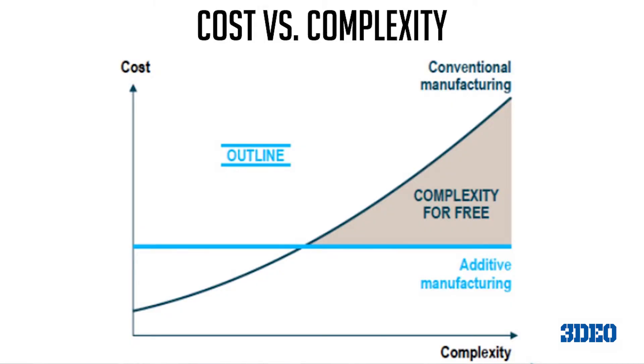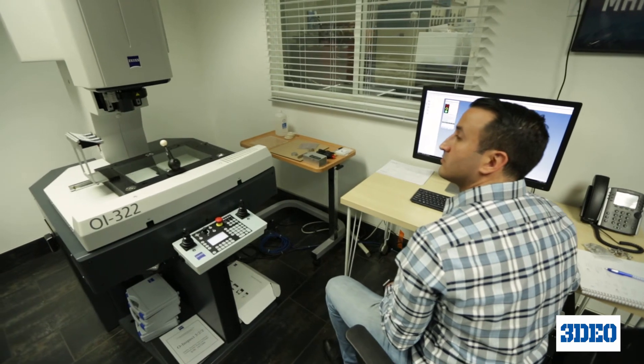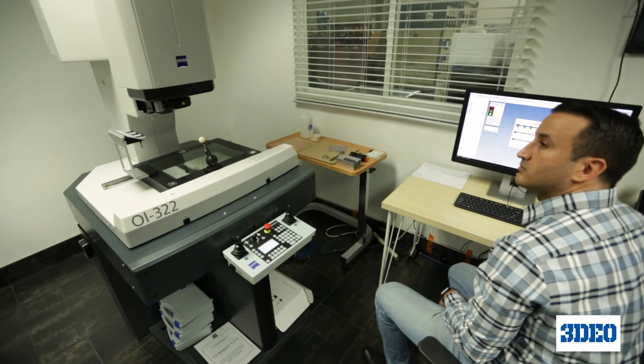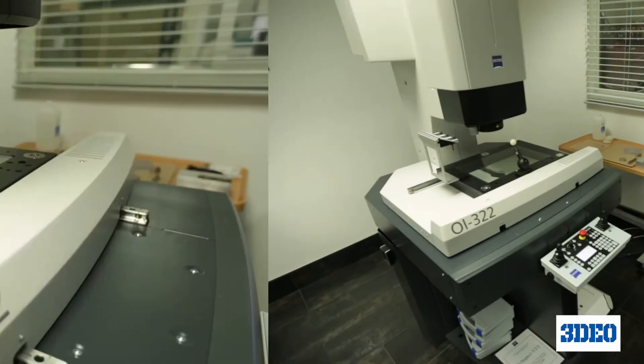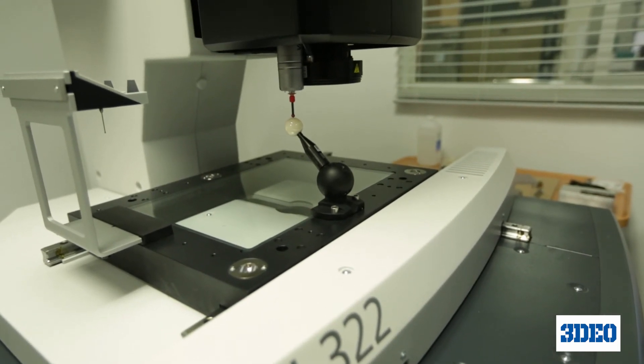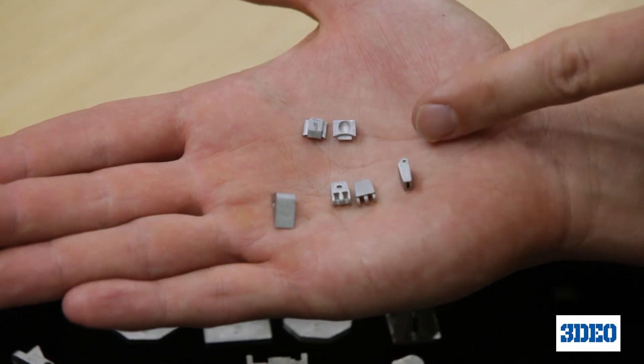What's really interesting is when you compare additive manufacturing to traditional manufacturing: with traditional manufacturing, the more complex the part — the more complex the features or geometry — the more expensive it becomes. With additive manufacturing, the cost curve regardless of complexity is pretty flat. That means additive manufacturing really shines with complex parts. The more complexity in the part, usually the more of an economic advantage additive manufacturing has over traditional manufacturing, especially with 3DO's breakthrough technology.